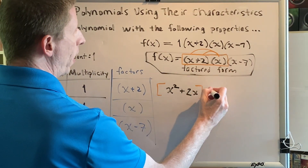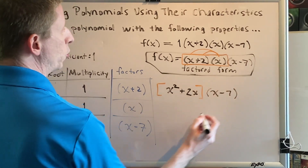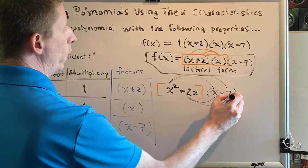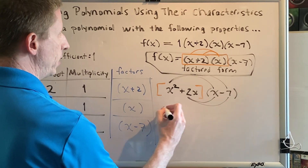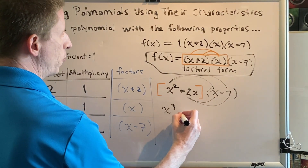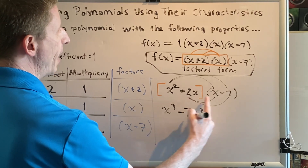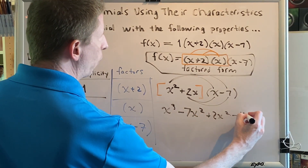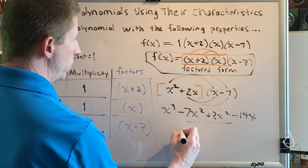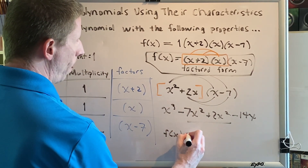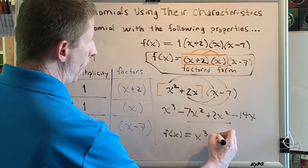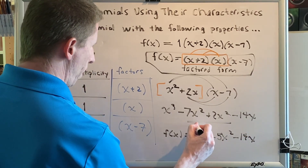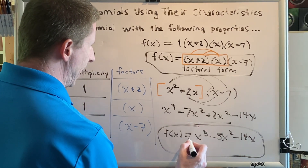Now x squared plus 2x needs to be multiplied by our other factor x minus 7, using the FOIL method. x squared times x is x cubed. x squared times negative 7 is minus 7x squared. 2x times x is plus 2x squared. 2x times negative 7 is minus 14x. Combining like terms gives our final answer in standard form: f of x equals x cubed minus 5x squared minus 14x.